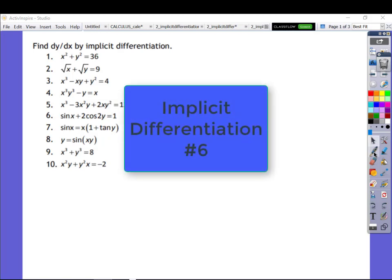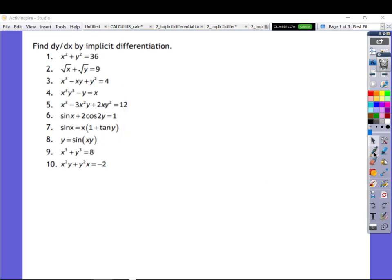Hello Mustangs, this is number 6 from your implicit differentiation homework. That's this one right here. So I'll just rewrite this problem. Here's sine of x plus 2 cosine of 2y is equal to 1. So number 6 right there.